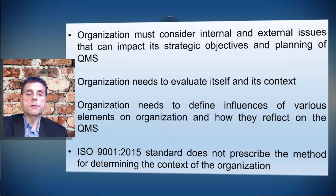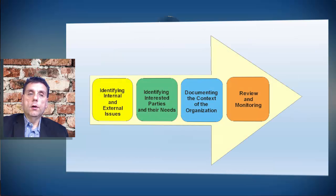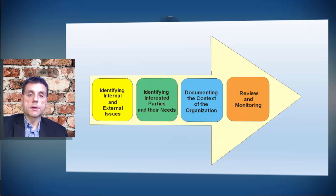ISO 9001:2015 does not prescribe the method for determining the context of the organization. So what are we supposed to do to address this requirement properly? We have to identify internal and external issues, identify interested parties and their needs and expectations, and document the context of the organization.